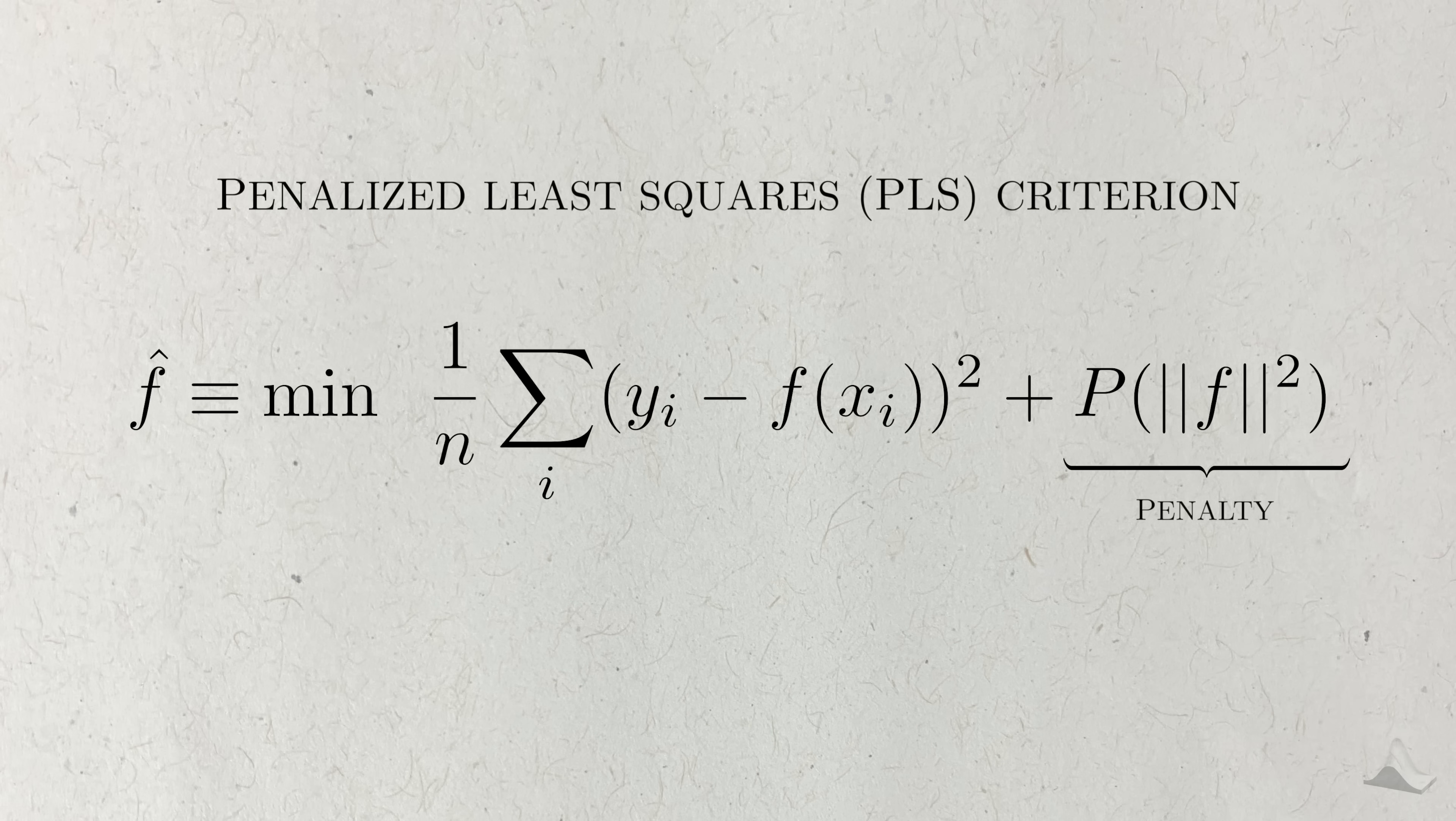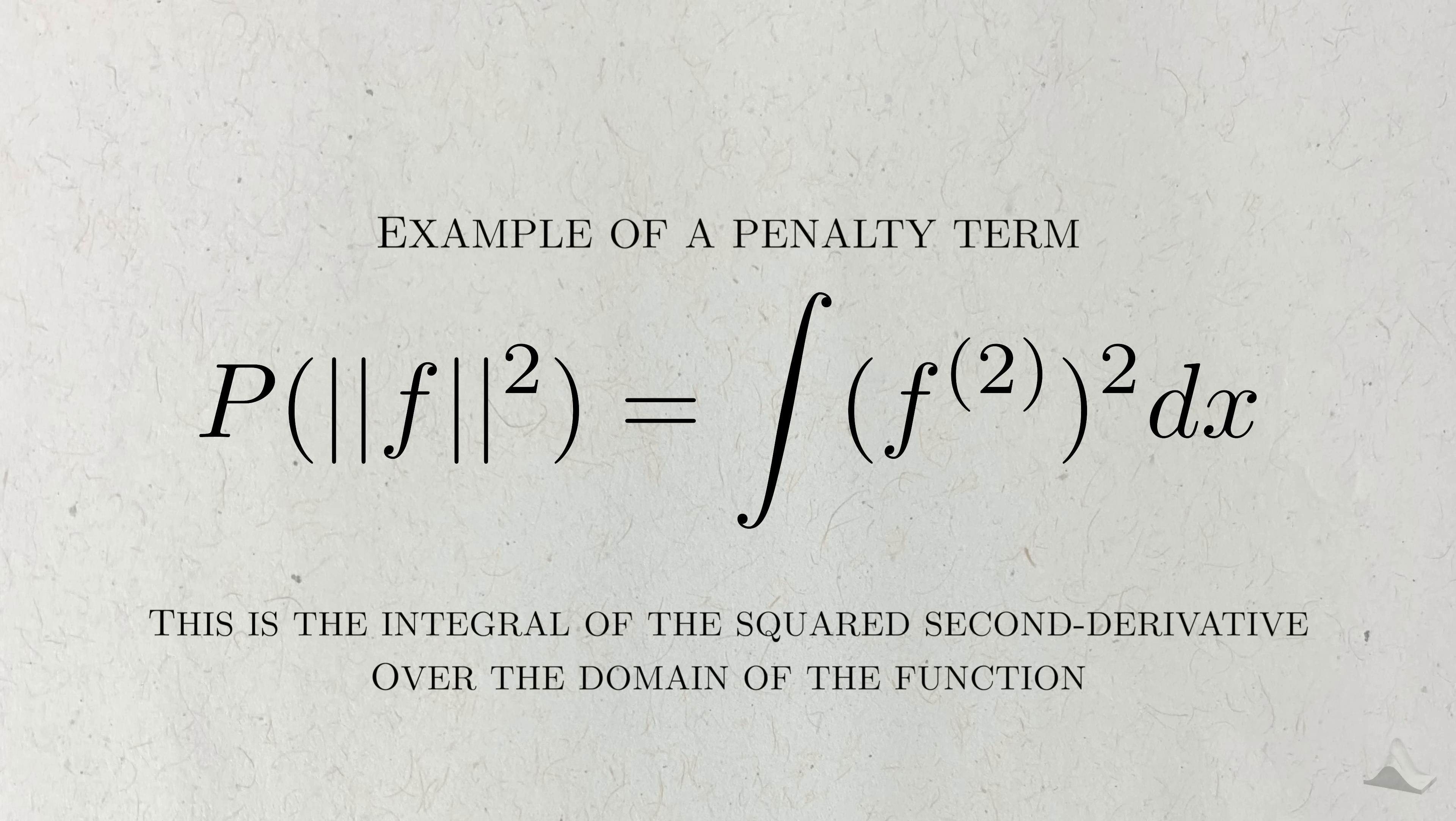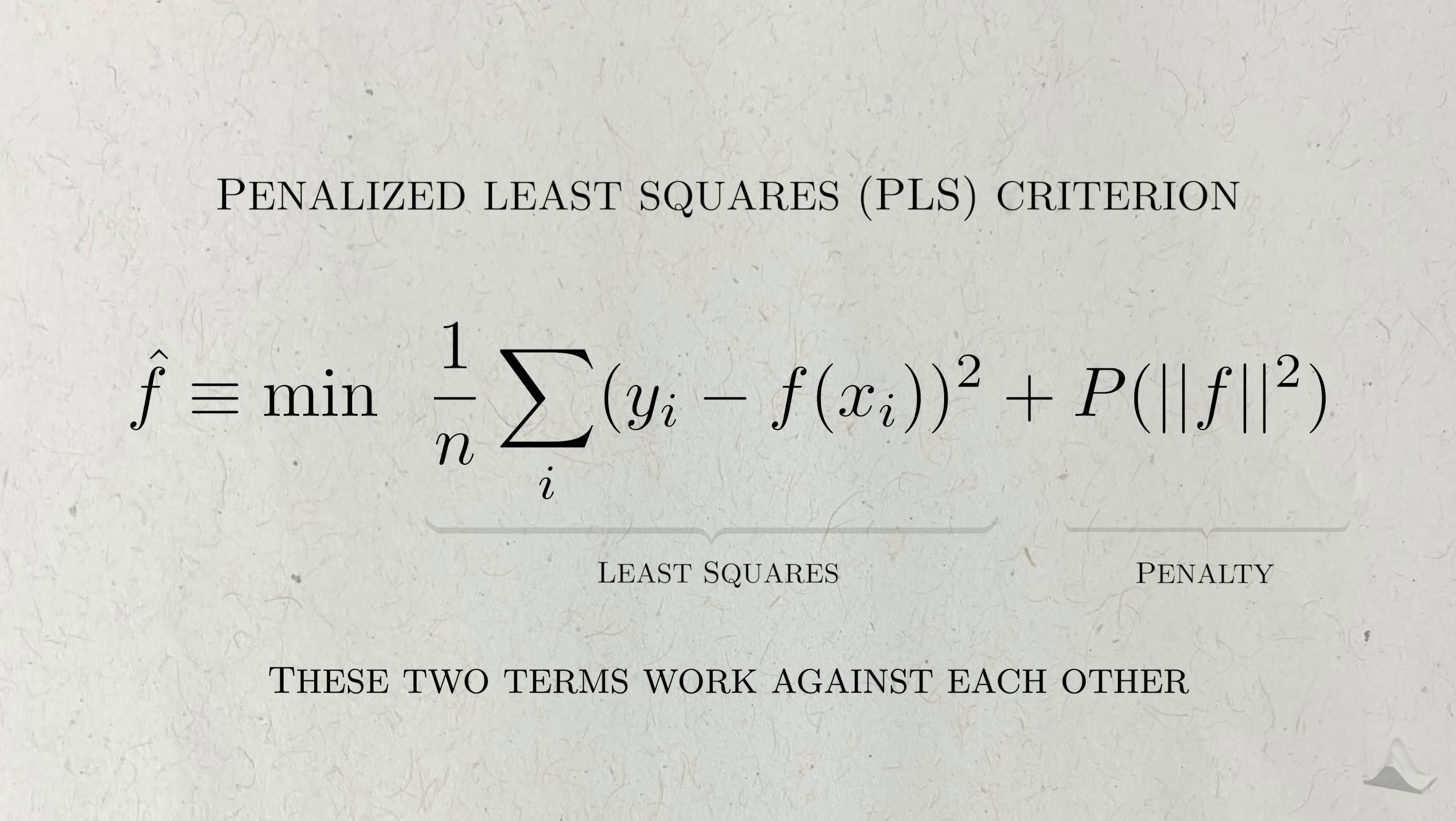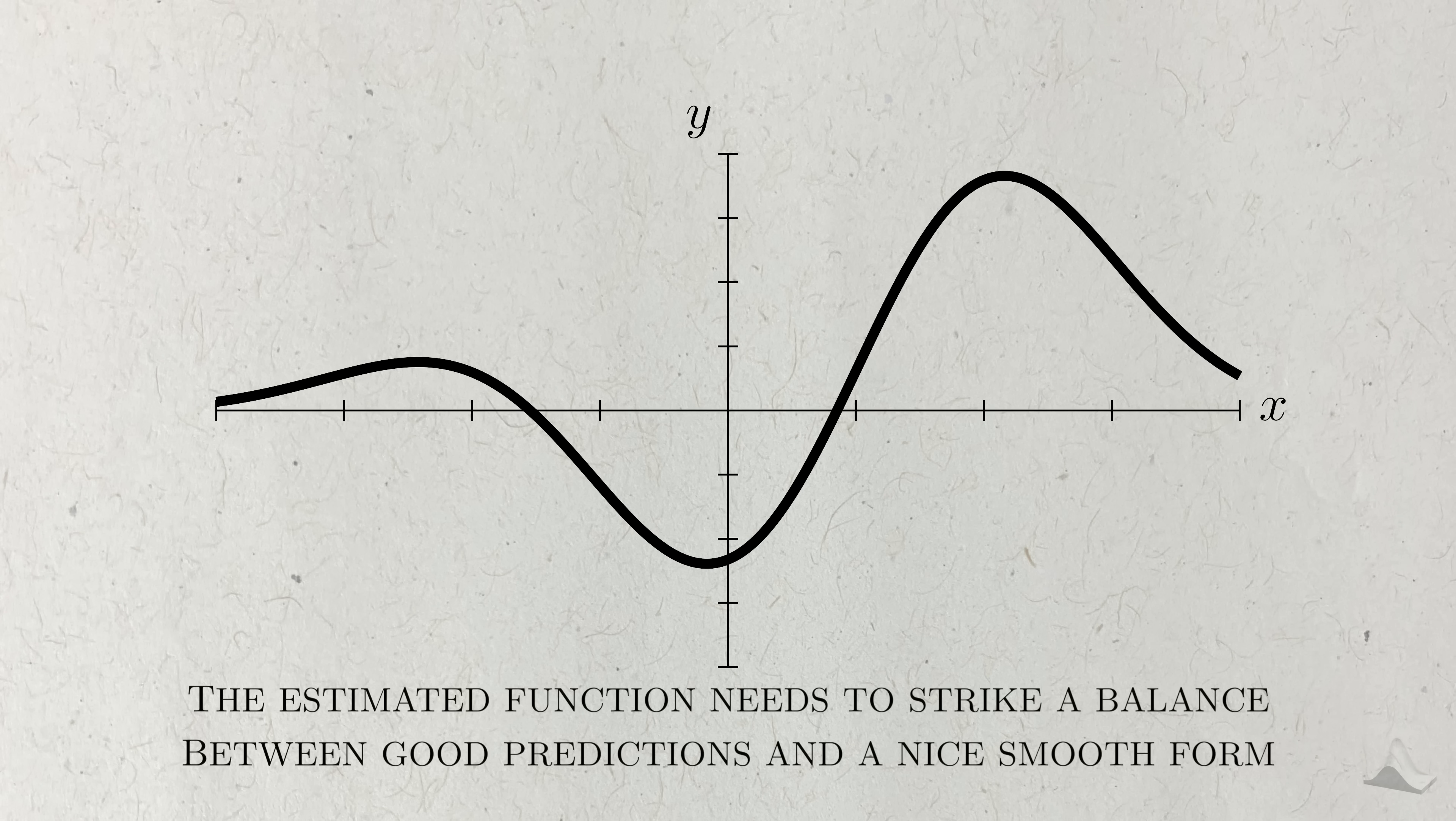That's where the penalty term comes in. It's a functional, which means that it takes in the function as an input and outputs a number. We can design this penalty term to be higher when the function is overly rough or wavy. For example, one penalty term we can use is the integral of the squared second derivative of the function. Wiggly functions tend to have higher second derivatives over their domain, causing this integral to be higher. These two terms in the penalized least squares criterion work against each other, but this conflict serves a purpose. In the end, the estimated function needs to strike a balance between good predictions and having a nice, smooth form.